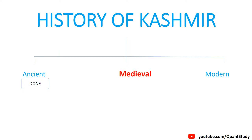Today's topic is based on the medieval history of Kashmir — a very important topic. In medieval history, there are a total of 8 dynasties of Kashmir, and this is a main exam question. In the last video, we studied the ancient dynasties: the Mauryan Empire, the Kushan Empire, and the Karkota dynasty. If you haven't watched that video, you can click the button at the top.